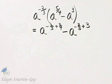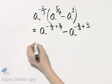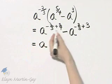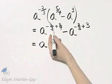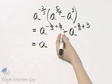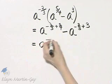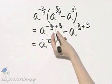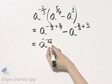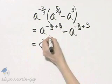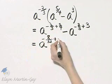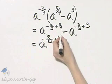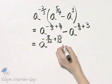Now how do we add exponents? To add exponents we need a common denominator. So we will work on each of these separately. What is the common denominator for three and four? It is twelve. Now remember this is a negative exponent. Three times four is twelve, and four times two is eight, plus four times three is twelve, and three times five is fifteen, minus.